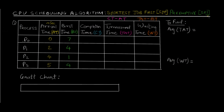As you can see on the screen, we have four different processes: P0, P1, P2, and P3. We've been given arrival times of 0, 2, 4, and 5, and also the burst times. Arrival time is when the process arrives in the queue, and burst time is the time required by the process to be completely processed by the CPU. There are three criteria we need to find: completion time, turnaround time, and waiting time.